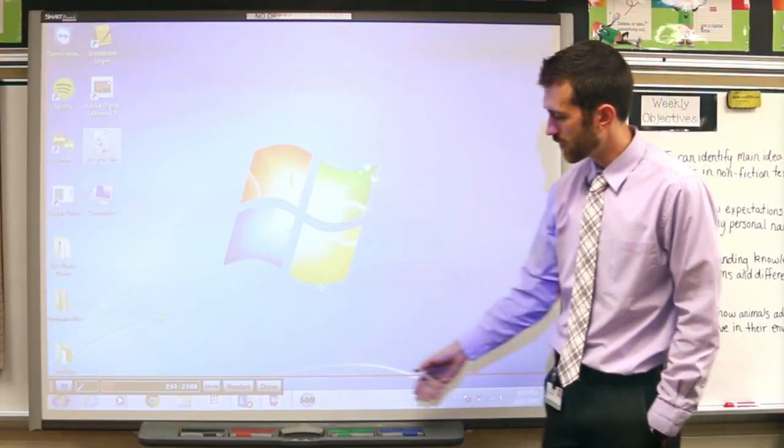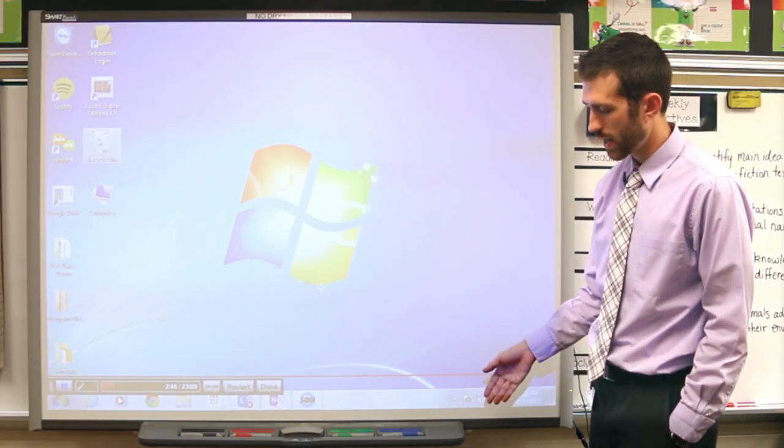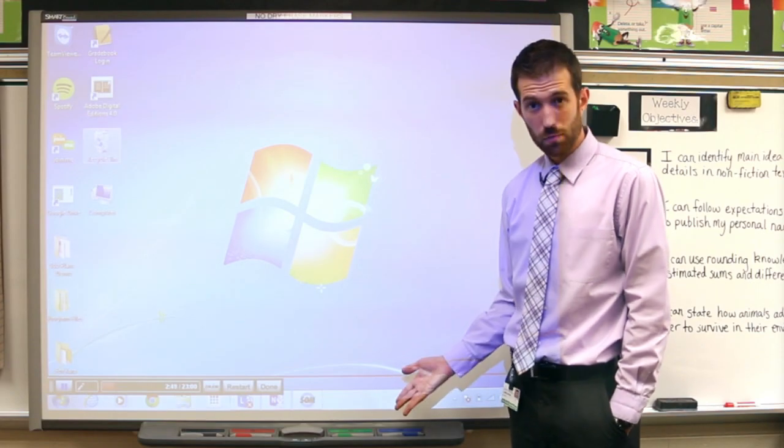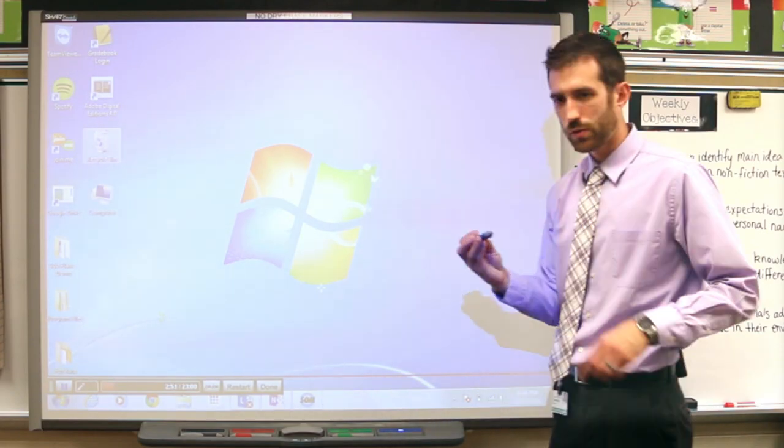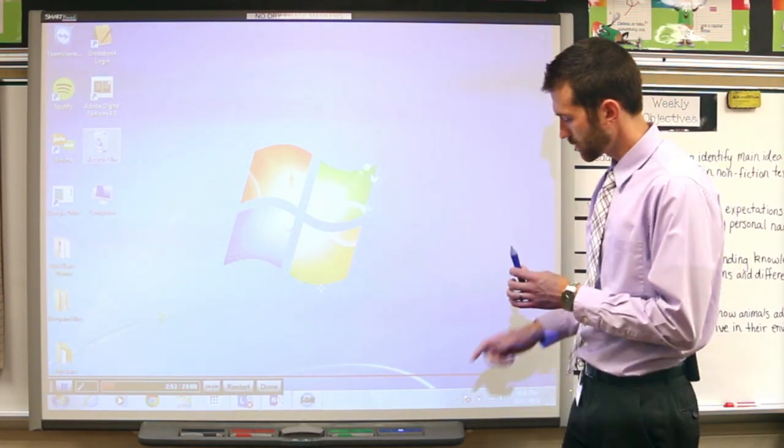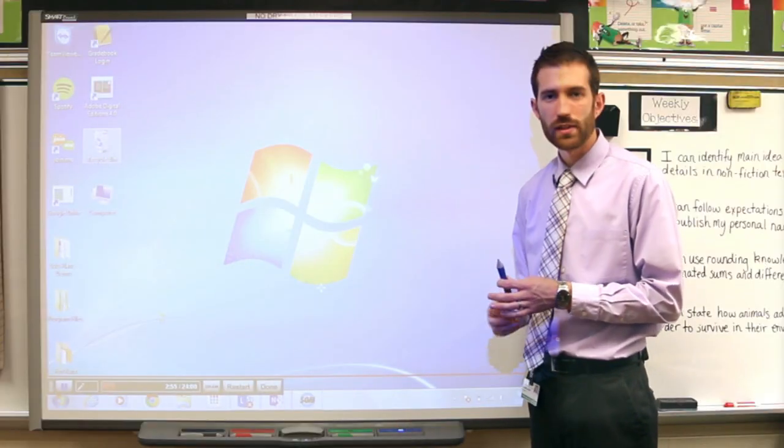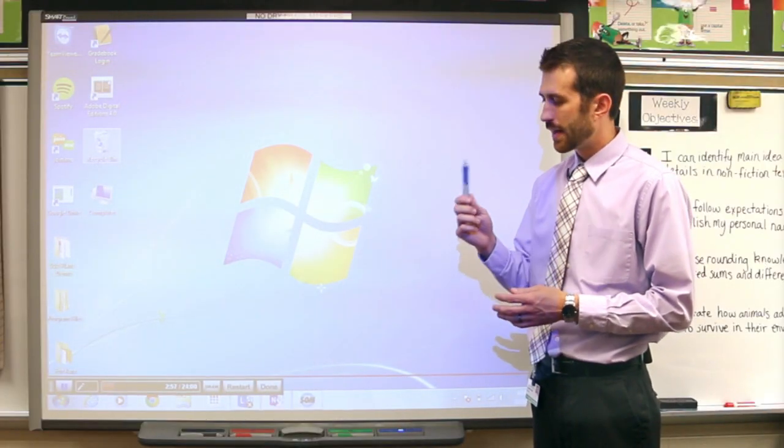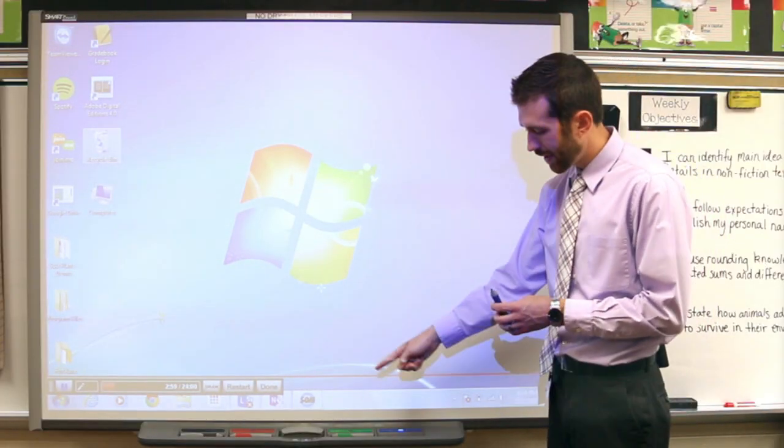Looking at the basic features here, you see that we have a pen tray, and the pen tray is filled with four different colored markers. If you pick one up, you'll notice that once you remove the pen, a light illuminates showing that the pen has been pulled out. That pen color is determined by the light that's illuminated.